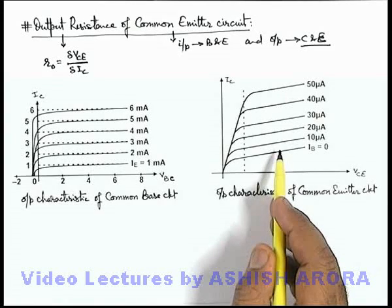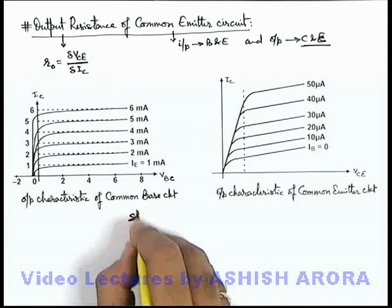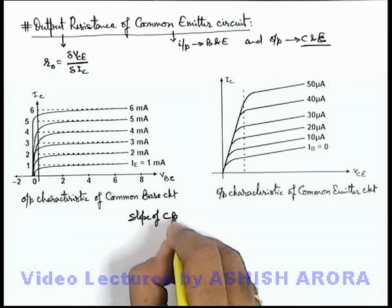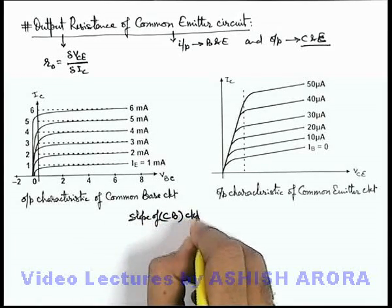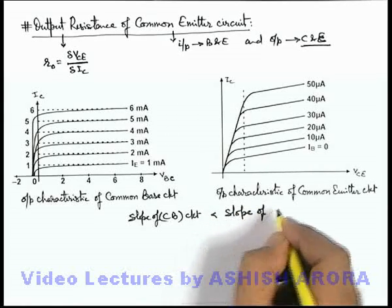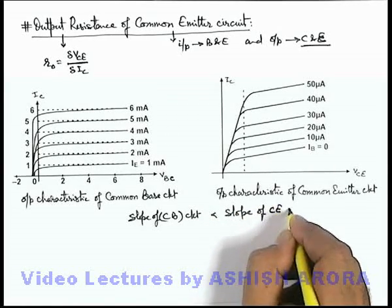So in this situation we can say, if we write that slope of common base circuit is less than the slope of common emitter circuit, then in this situation, obviously we know that...